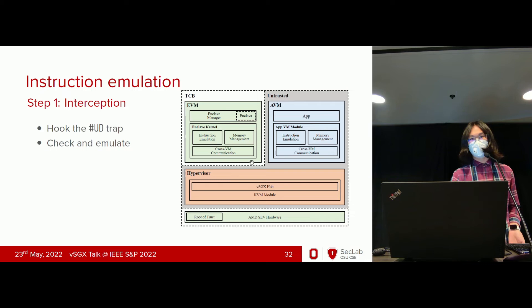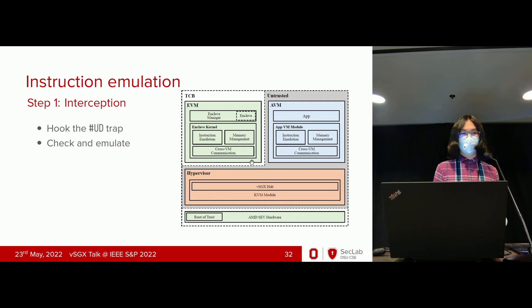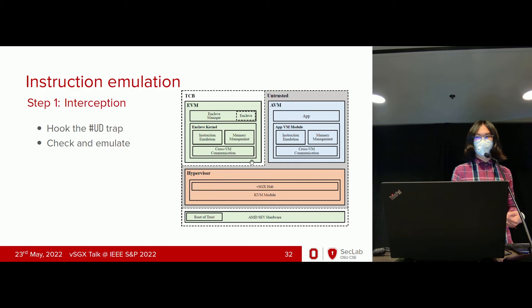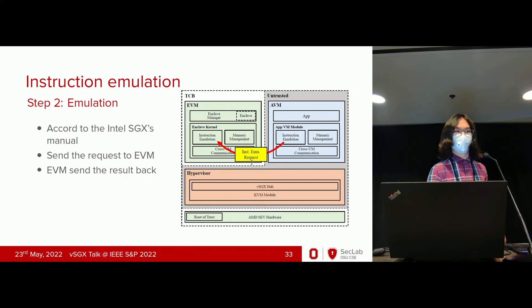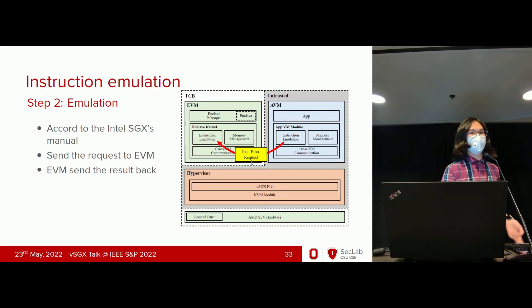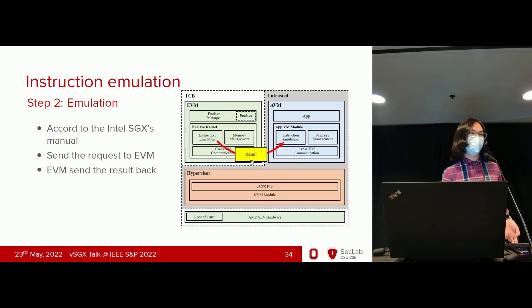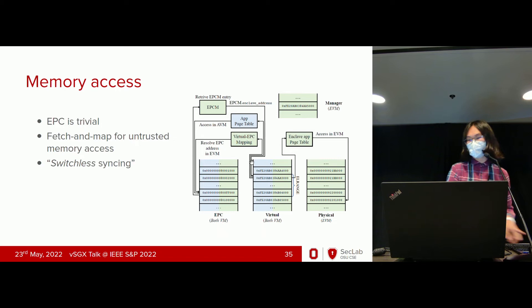We have several challenges: how do you do isolation, how do you perform emulation, handle memory access problems, connect the components, and handle control flow? Since there's no SGX instruction handling on SEV, we hooked the UD trap — the undefined instruction trap — and in that handler we check and emulate all SGX instructions. Instructions that work on sensitive data structures must be handled within the EVM, so we emulate everything according to the Intel SGX manual and send instruction emulation requests to the EVM; when the EVM is done, it sends results back.